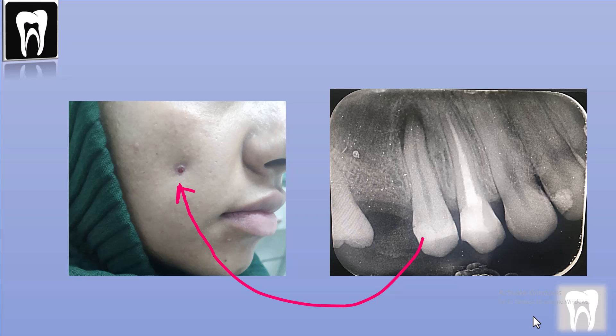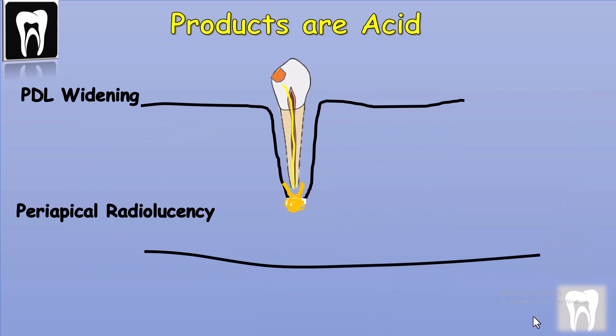Mostly patients have no pain or mild pain, so they don't refer to the dentist and the inflammation process goes on and on, and a lot of acid is produced. The products look for the easy way to get out, so it comes out from the apical foramen and spreads inside the bone.